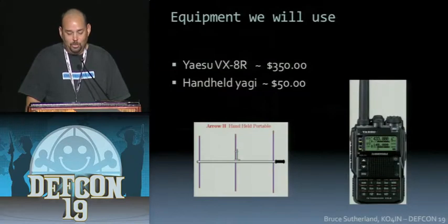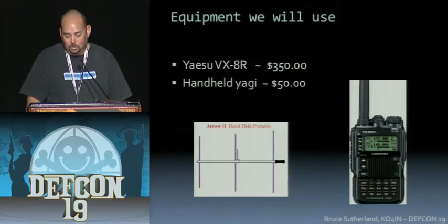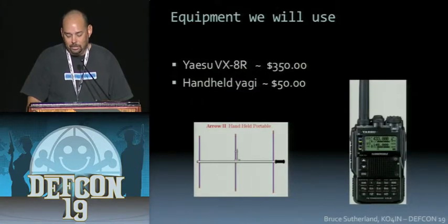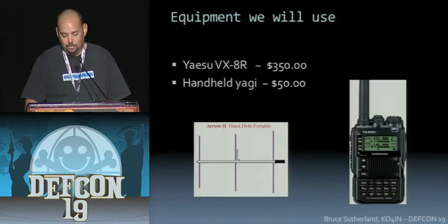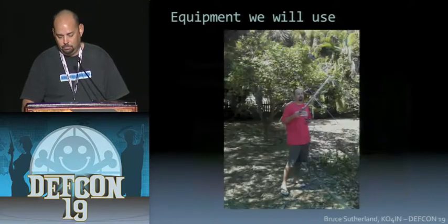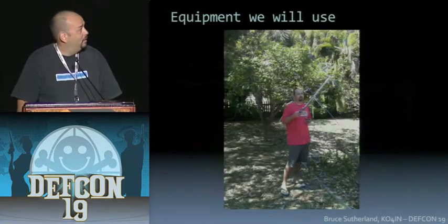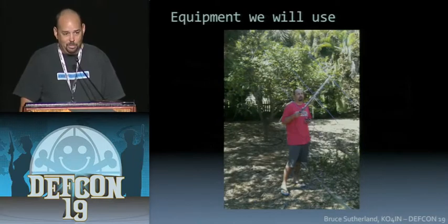The equipment we're going to use for this operation consists of a small handheld radio with an output of about five watts of power. Doesn't sound like a lot, but that's really all we need to do what we're going to do, along with a small handheld antenna. Here's a picture of me demonstrating the proper use of the equipment.